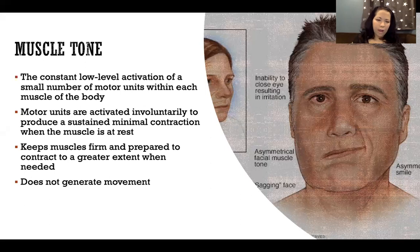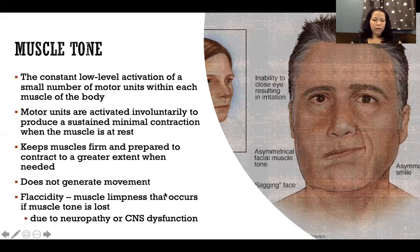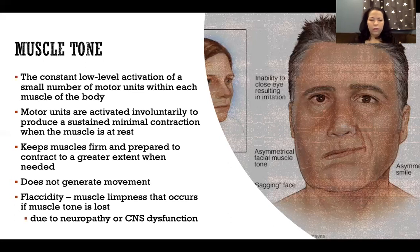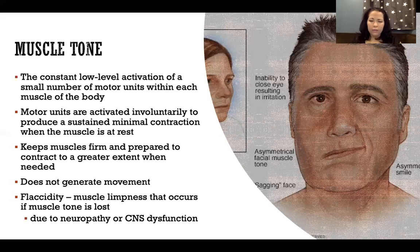Muscle tone does not generate movement. Flaccidity is the muscle limpness that occurs if muscle tone is lost, caused by neuropathy or some central nervous system dysfunction. Flaccidity would be some kind of paralysis where motor control to those muscles is gone — we wouldn't be able to contract it voluntarily, and we also wouldn't have involuntary muscle tone going to that muscle when it's at rest.